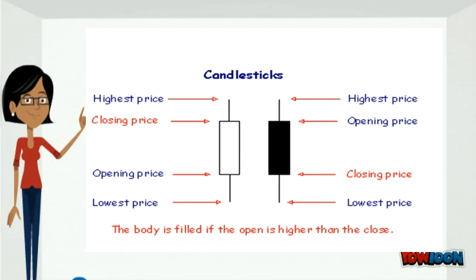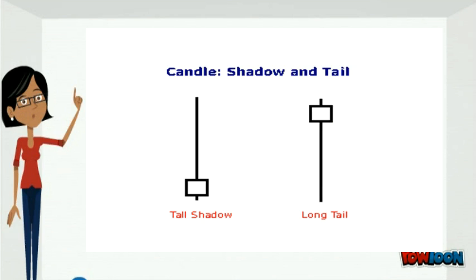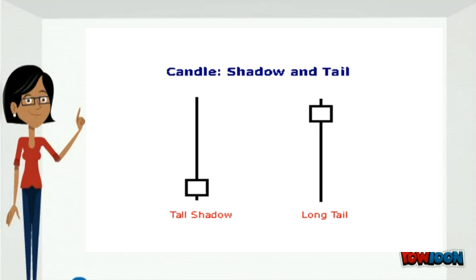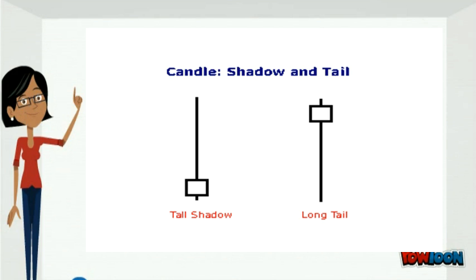First, I am going to tell you about Shadow and Tail. The shadow is the portion of the trading range outside of the body. We often refer to a candlestick as having a tall shadow or a long tail. A tall shadow indicates resistance. A long tail signals support.